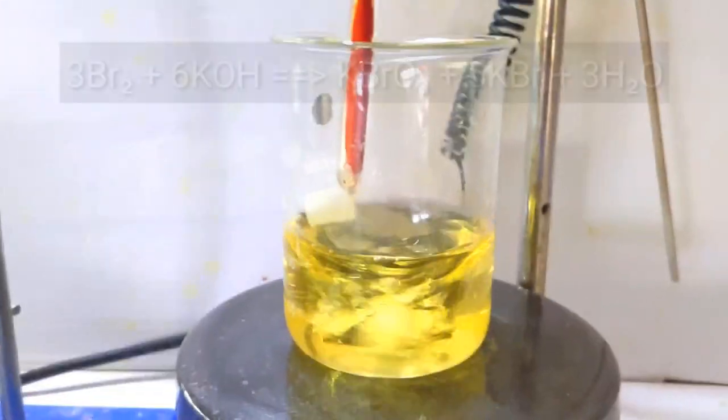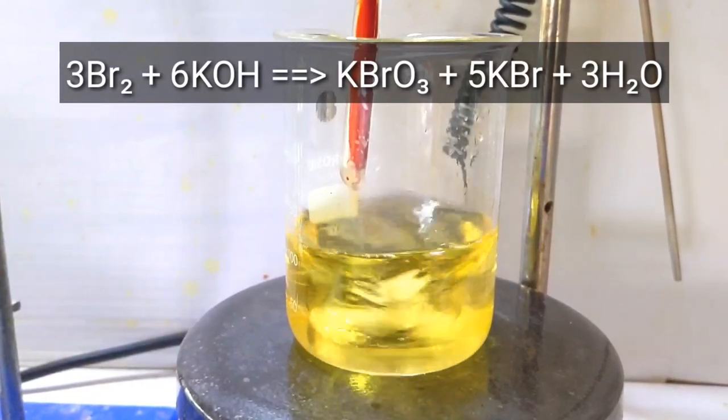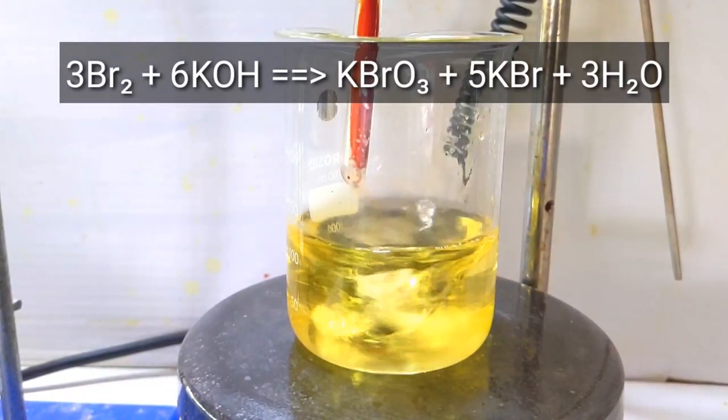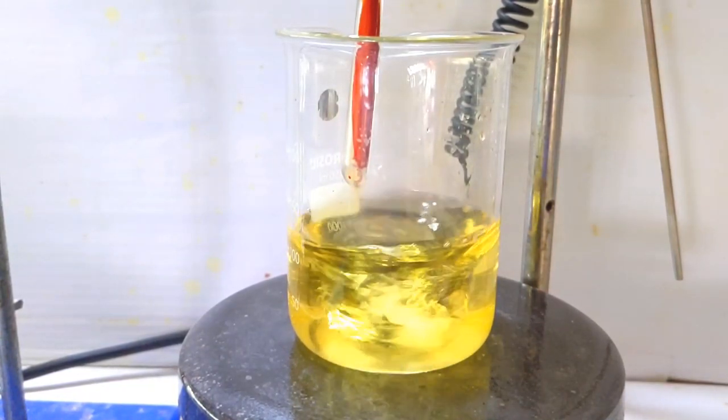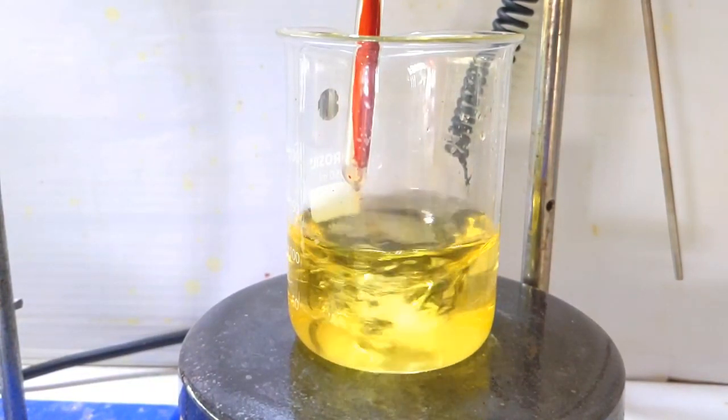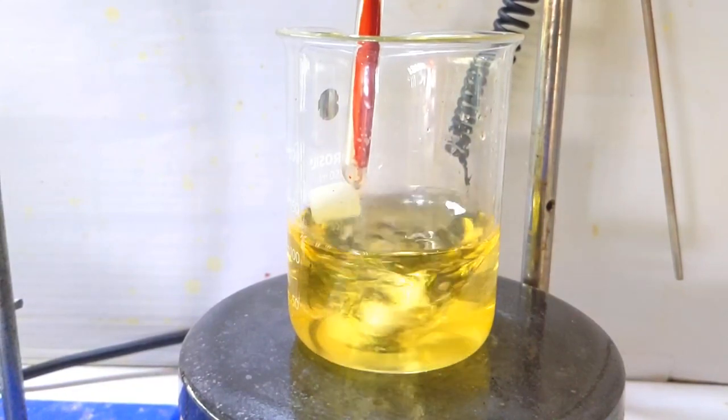What is happening here is potassium hydroxide reacts with the liquid bromine, forming potassium hypobromite, which immediately disproportionates because it is unstable to form potassium bromate and potassium bromide.